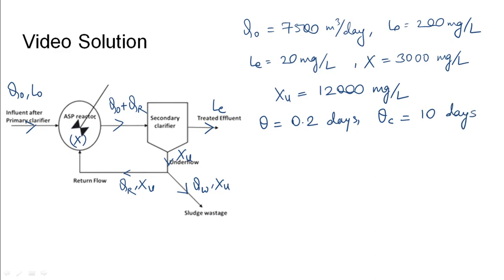For finding the Qw, we need to use the equation for theta_c, that is mean cell residence time. Theta_c is given as VX over (Q0 minus Q wastage) into Xe, that is the MLSS concentration in the treated effluent, plus Q wastage into Xu.